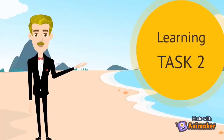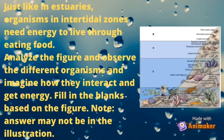Let's do learning task number two. Just like in estuaries, organisms in intertidal zones need energy to live through eating food. Analyze the figure and observe the different organisms and imagine how they interact and get energy. Fill in the blanks based on the figure. Take note: answers may not be in the illustration.